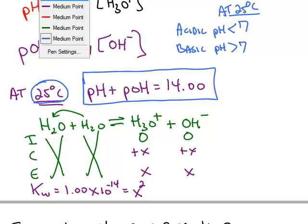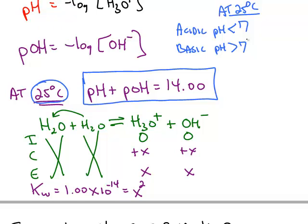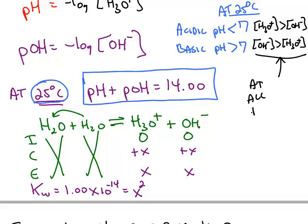A better definition of acidic and basic: acidic means you have more hydronium than hydroxide, and basic means you have more hydroxide than hydronium. These definitions are true at every temperature.